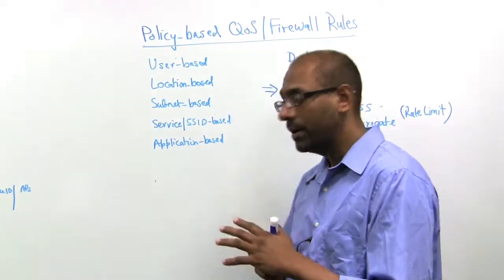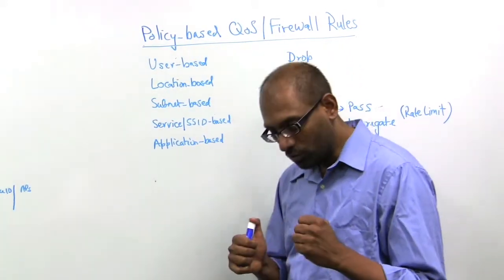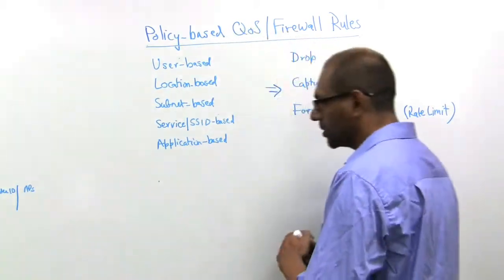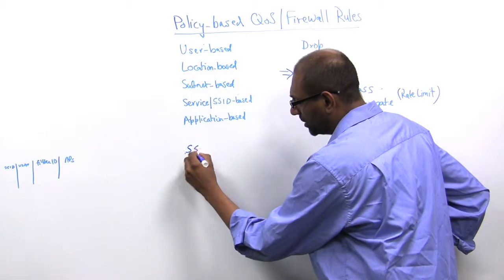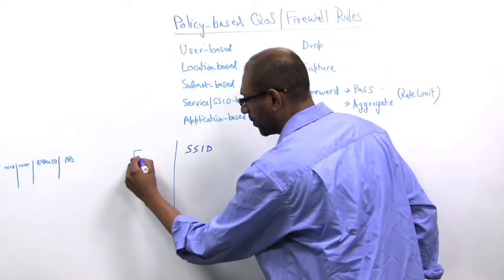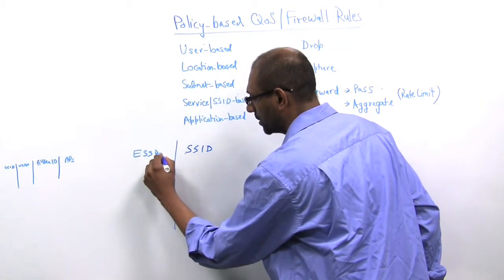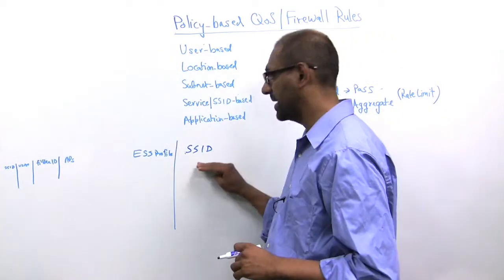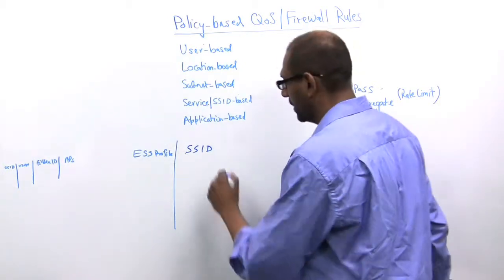Now the way we map SSIDs to essentially differentiate users is the following. First, associated with an SSID, we have something called an ESS profile. This is a profile wherein multiple profiles might have the same SSID, and we'll talk about why that's relevant.